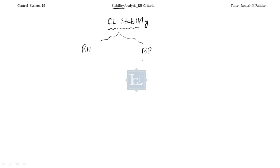We also have three other methods: the Bode plot, Root Locus, and Nyquist plot. Polar plot and Nyquist plot — they are the same or related to each other.